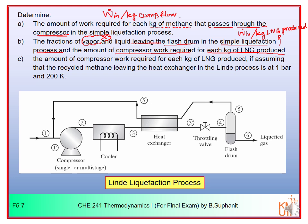Lastly, we want to determine the compressor work required per kilogram of LNG produced if we recycle the methane leaving the heat exchanger in the Linde liquefaction process at 1 bar and 200 Kelvin — point 5 prime. So we compare the performance of the simple and Linde liquefaction processes.